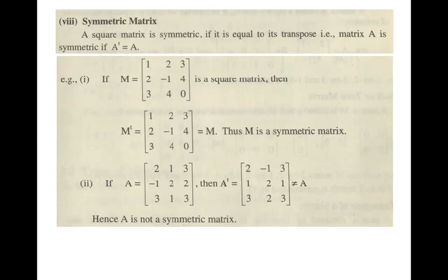The equal matrix definition states that the order is the same and corresponding elements — corresponding entries — are the same. Since M^T equals M, this matrix M is called a symmetric matrix.